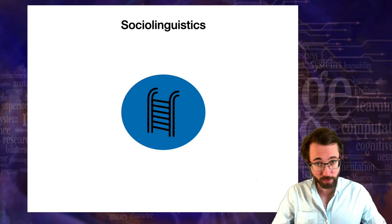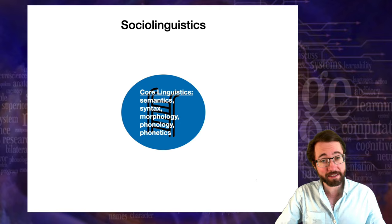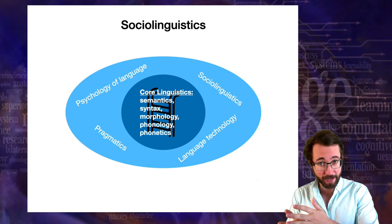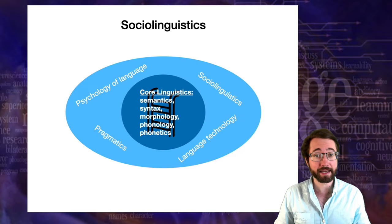Just to situate ourselves, we climbed the ladder of core linguistics and learned the nuts and bolts of how languages work — that was phonetics through semantics. Now we're in the section of the class where we apply that knowledge. We've finished talking about pragmatics, which is how we use language in conversations, and we're proceeding to sociolinguistics, where we look at how language is used and structured within a society as a whole.